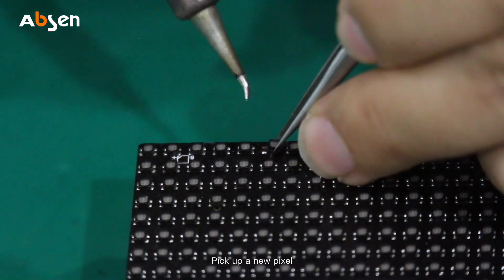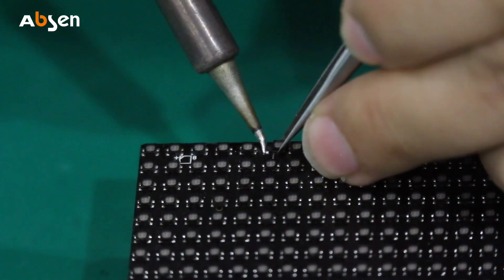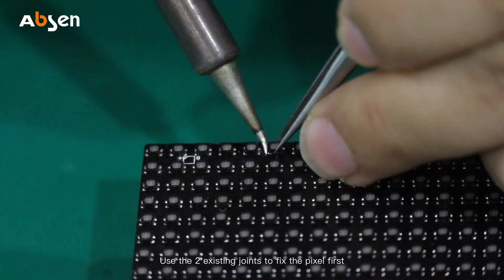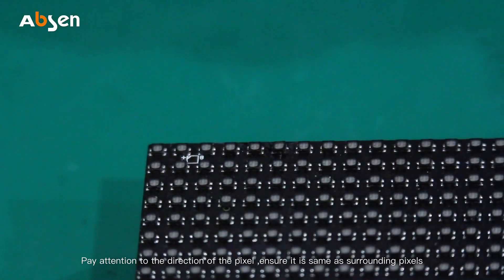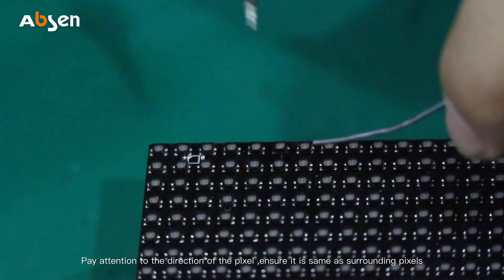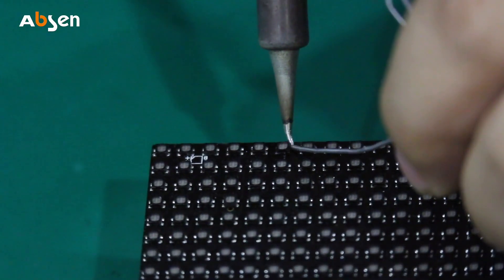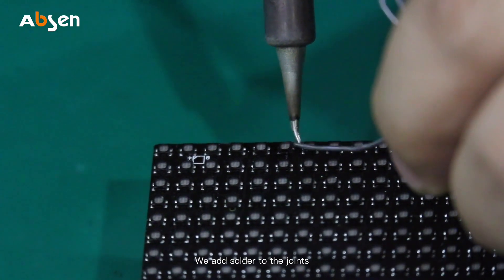After cleaning the PCB, pick up a new pixel. Use the two existing legs to fix the pixel first. Pay attention to the direction of the pixel, ensure it's the same as the surrounding pixels. We add solder to the joints.